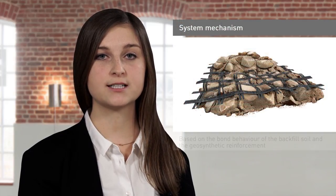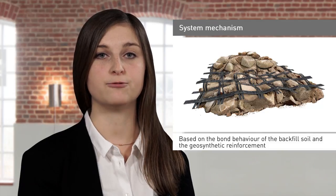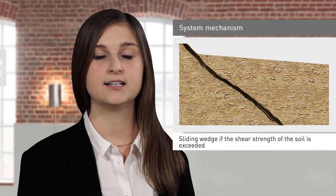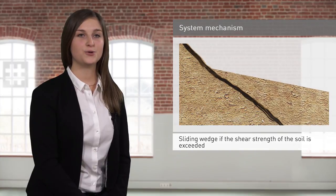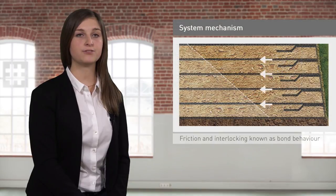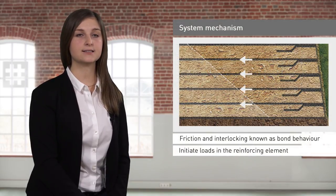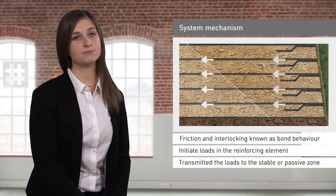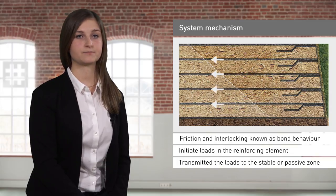The system's mechanism of action is based on the bond behaviour of the backfill soil and the geosynthetic reinforcement. If the shear strength of the soil is exceeded, a sliding wedge is formed in the active area. In this area, friction and interlocking, known as bond behaviour, initiate loads in the reinforcing element. From there, the loads are transmitted to the stable or passive zone. This means that if the bond behaviour is favourable, the deficit of forces is compensated by the tensile strength of the geosynthetic reinforcements and structural integrity is maintained.